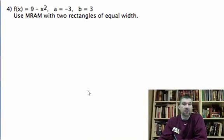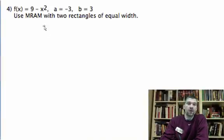Okay, using MRAM, this is going to be really similar to the problem we just worked out. We're going to use the function 9 minus x squared, going from negative 3 to 3, and we're going to use MRAM with two rectangles of equal width. Just two, so that's really not too bad at all.